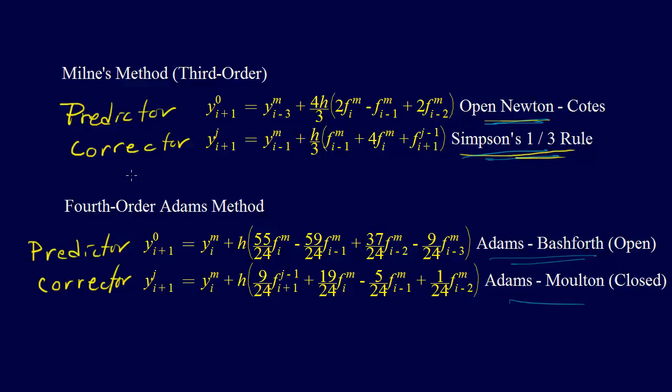And so, in a lot of situations that is true, Milne's method is better, but there are some situations where we get instability. So we get instability in the problem, and that makes Milne's method not so good. And the specific problem with Milne's method is that the corrector is unstable.